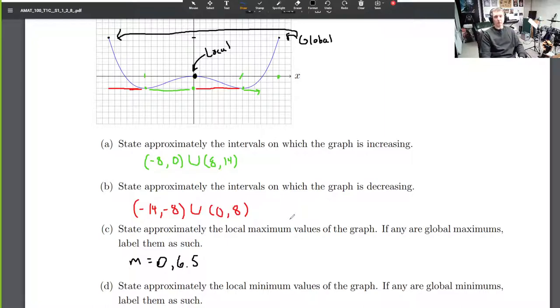Part D: State approximately the local minimum values of the graph. If any are global minimums, label them as such. The only local and global minimums we see are right here and right here. Those are both at a height of negative 2. Maybe I'll call this capital M for max and little m for minimums. So negative 2 is the minimum value that they take, and they're both global. There's nothing smaller on this entire graph. They're both local because they're the smallest thing close by.